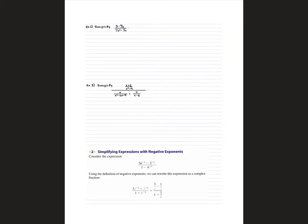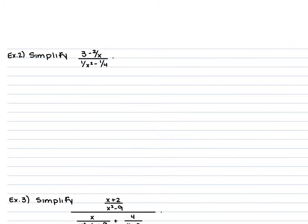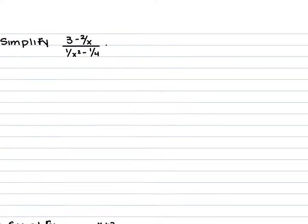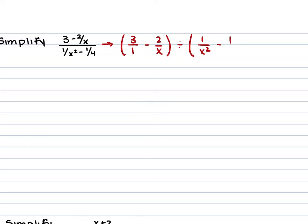For the next example, we are given 3 minus 2/x, all over 1/(x squared) minus 1/4. Again, don't think of this as just two fractions — think of it as division. So this is going to be (3/1 minus 2/x) divided by (1/(x squared) minus 1/4).